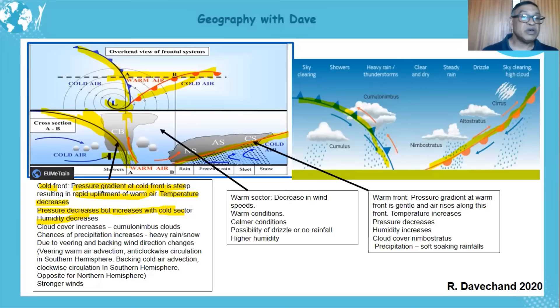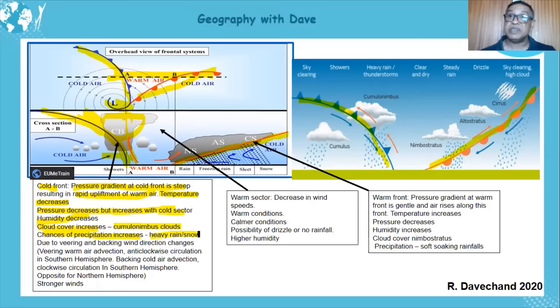Cloud cover increases because all the moisture is being forced up — condensation and cumulonimbus clouds form. So cloud cover increases and you get cumulonimbus clouds due to the rapid upliftment. Chances of precipitation increase — it can be heavy rainfall or snow over these areas.